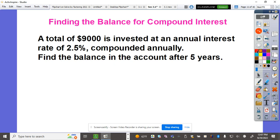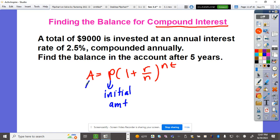We're going to apply finding the balance for compound interest. The formula is A = P(1 + R/N)^NT. P is your initial amount, A is the final amount.